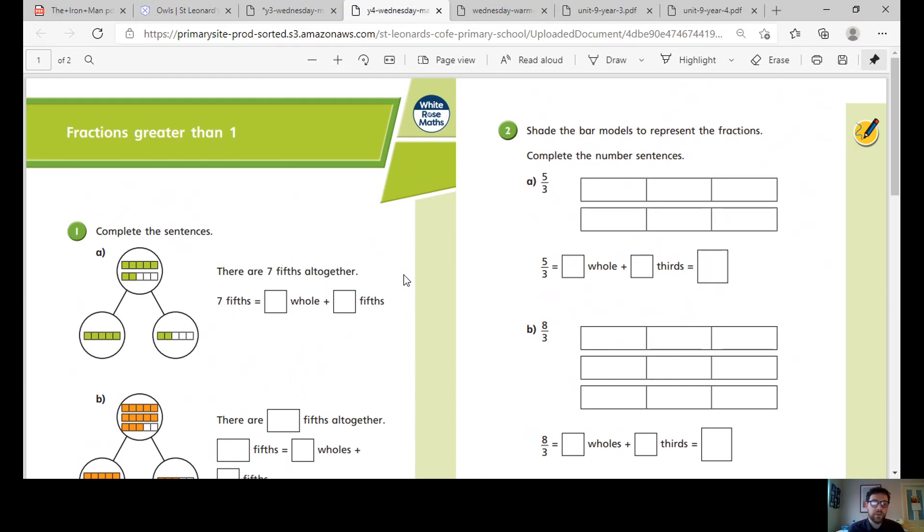Year fours, we are looking at fractions, this time greater than one. So we're looking at fractions that are more than one whole. So complete the sentence. There are seven fifths altogether. That means we've got one, two, three, four, five. So five fifths is a whole. Then we've got two more. One, two.